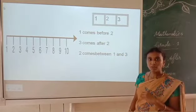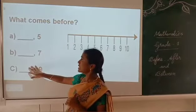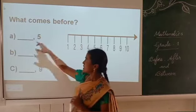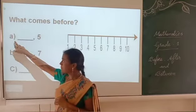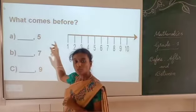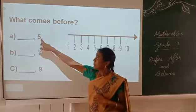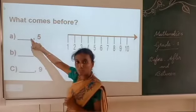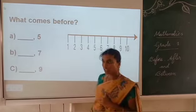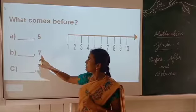Do you understand children? Shall we look at some examples? Here I have given examples of before numbers. What comes before? First question: what is the before number of 5? Using the number line, we can easily find it — 4 comes before 5. Next, what comes before 7?